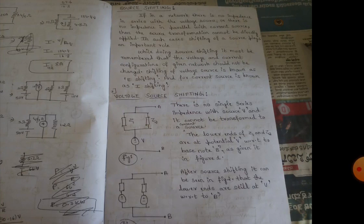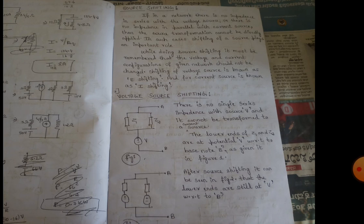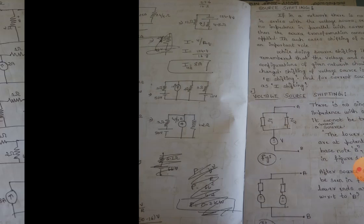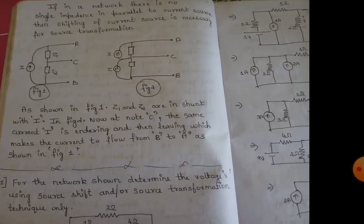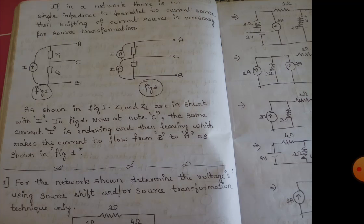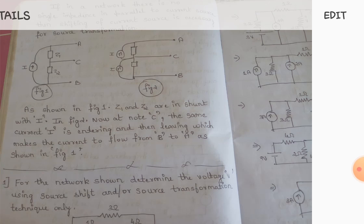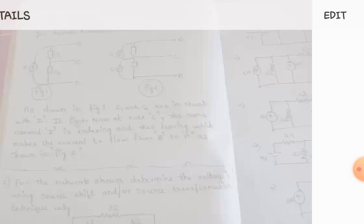We also have another concept called source shifting. Source shifting is where there are multiple sources attached with two resistances. For example, if there is a current source attached with two impedances, we can split that source into two parts.